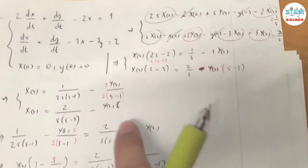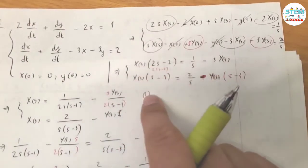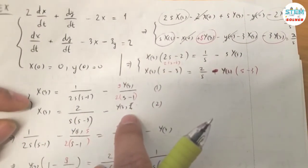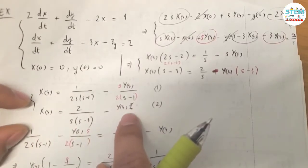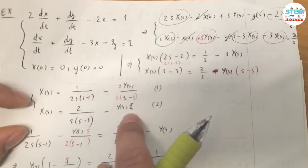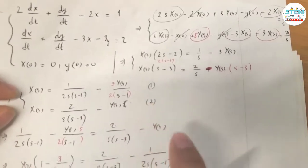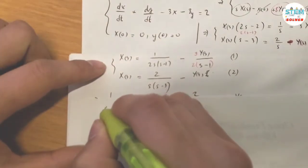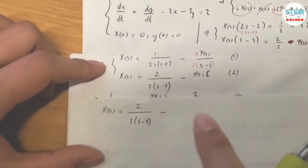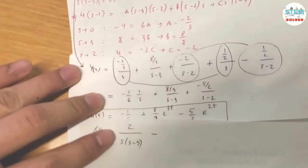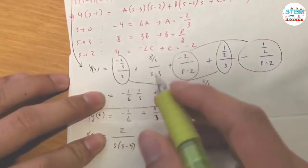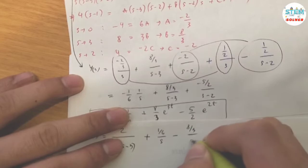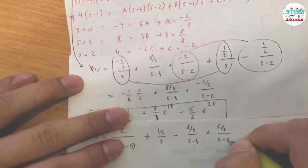We have to go back and find X(S). Let's call the first expression equation one and the second equation two. We know Y(S), so now use equation two to find X(S). Substituting, X(S) equals two over S(S minus 3) minus Y(S). And Y(S) is the expression we just found: positive one-sixth over S minus four-thirds over (S minus 3) plus five-halves over (S minus 2).